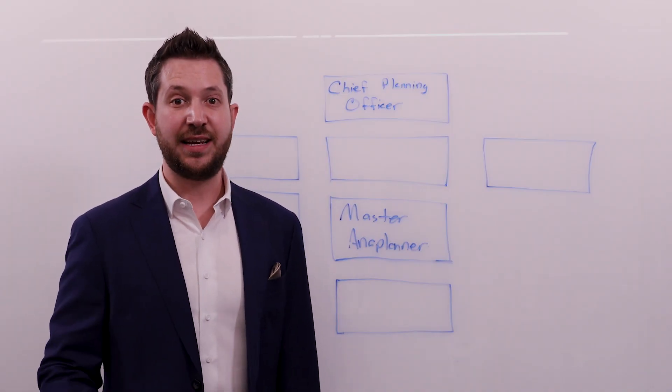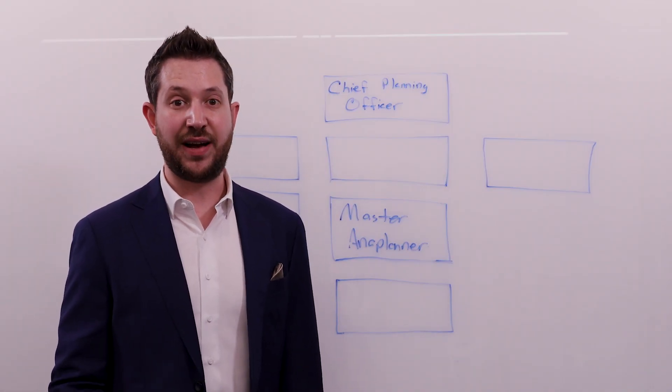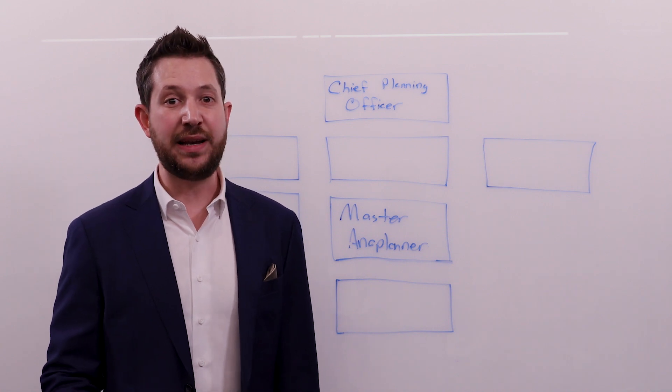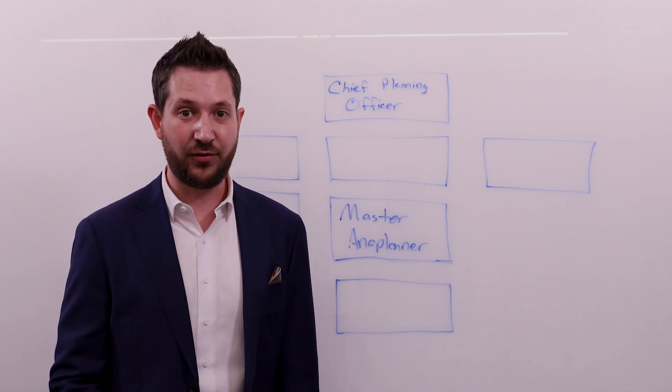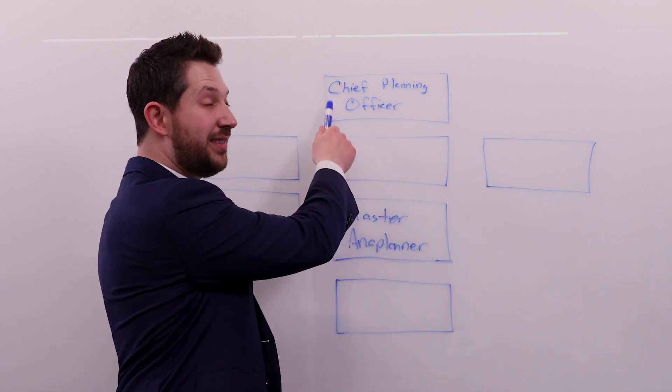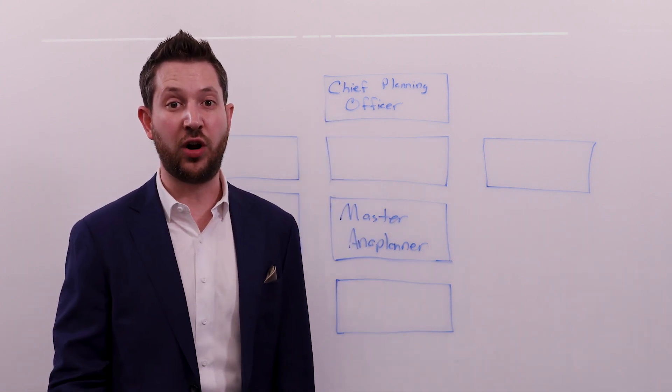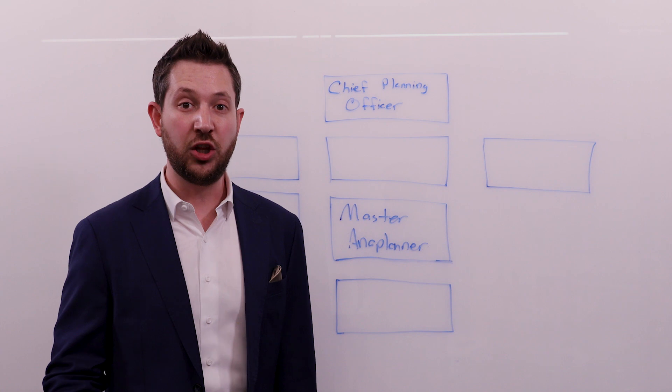The chief planning officer is the executive sponsor of a center of excellence. The reason that we need a different officer, a different person at the top of your organization, is because this person enables cross-functional planning. When we look at Connected Planning, when we look at expansion of Anaplan across a company, we look at connecting sales, marketing, finance,